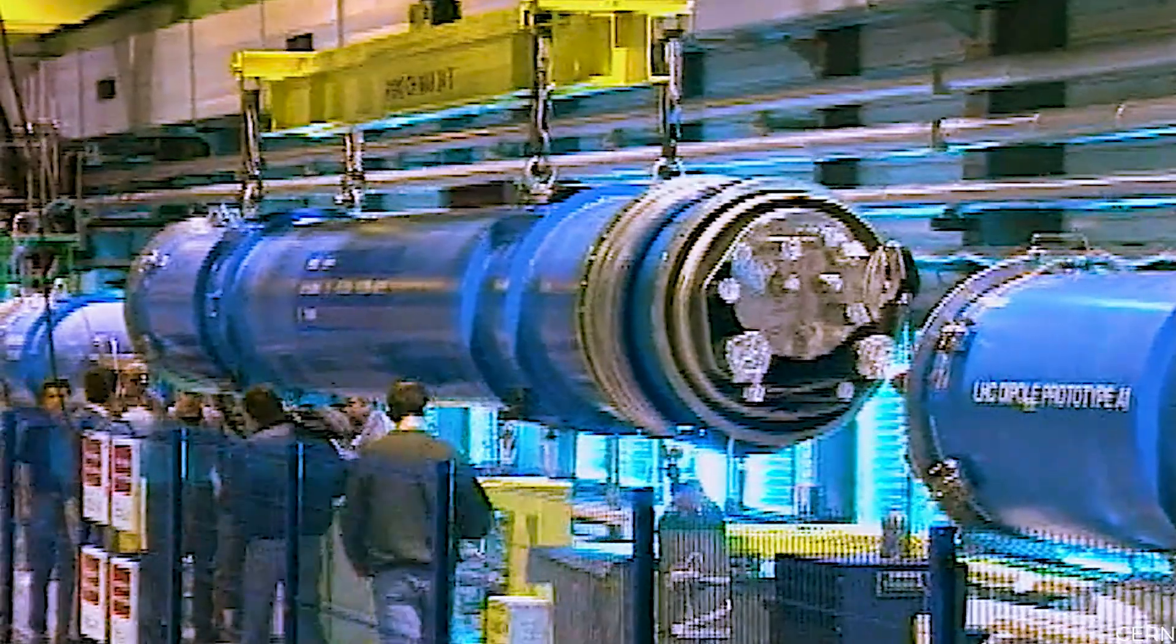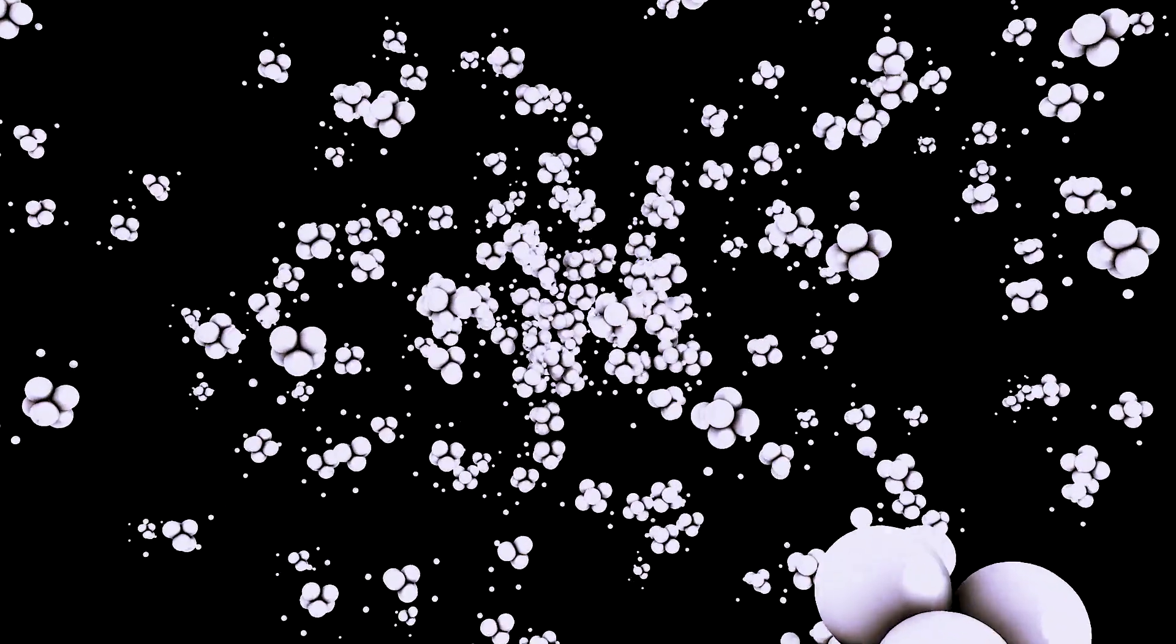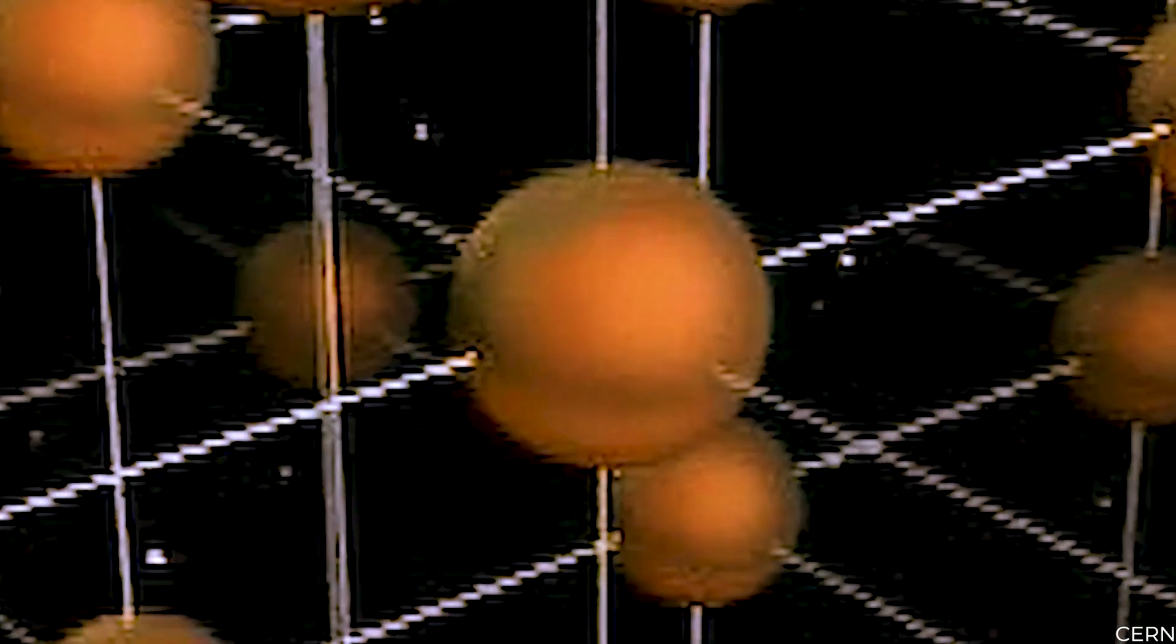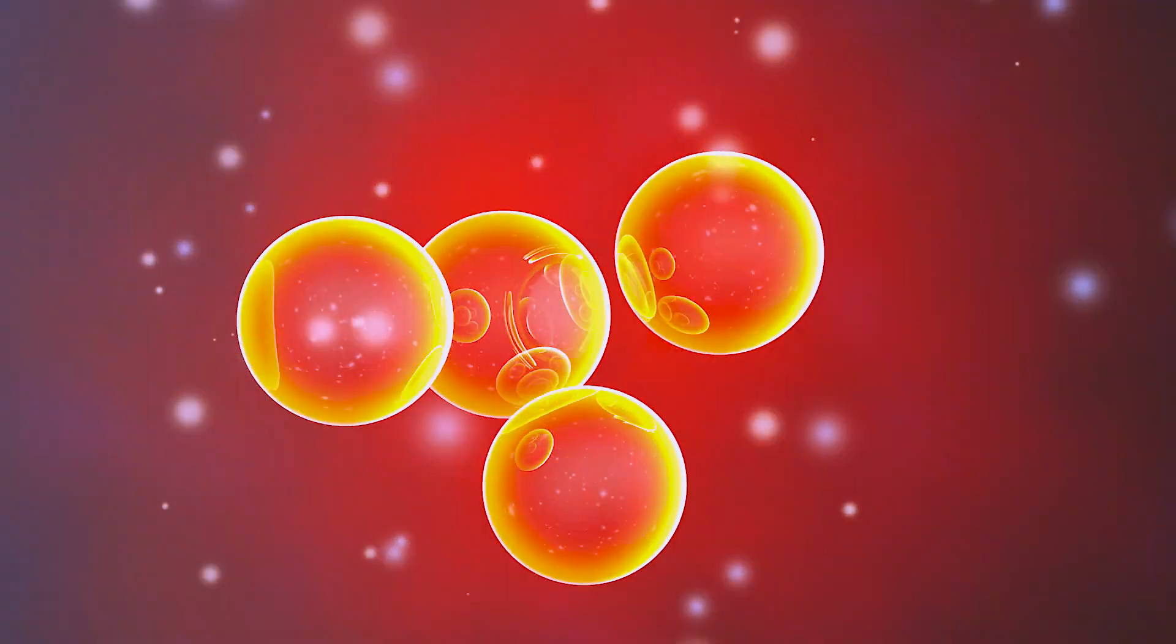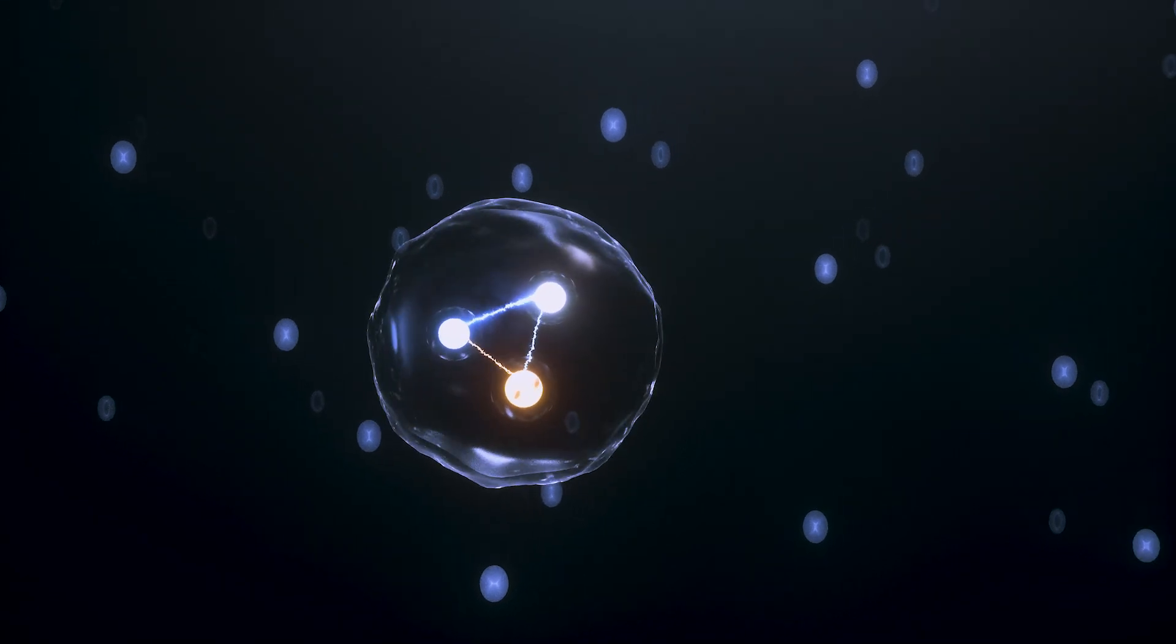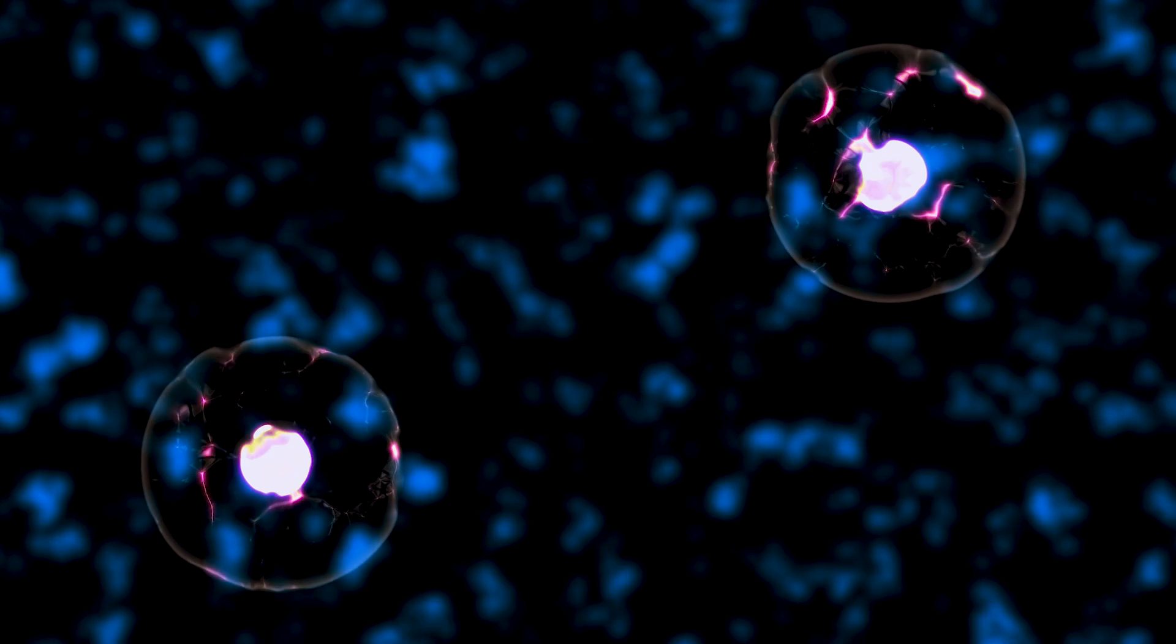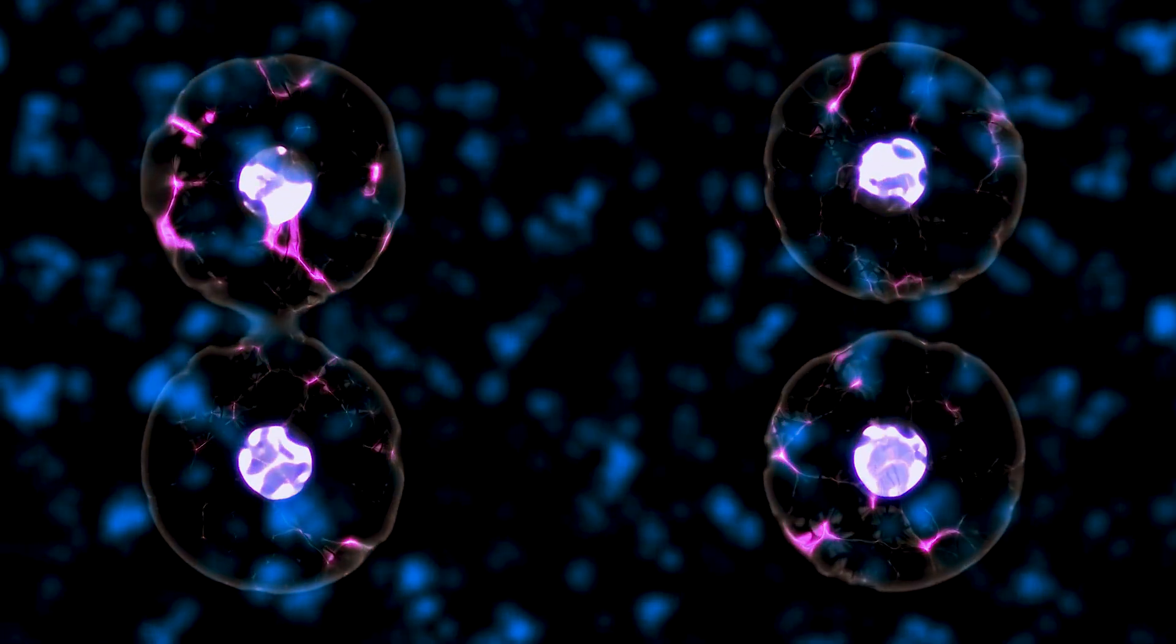Certain scientists are attempting to determine the tiniest building components of matter. Except for dark matter, all matter consists of molecules, which are made up of atoms. Electrons circle around the nucleus within the particles. The nucleus is composed mainly of protons and neutrons.